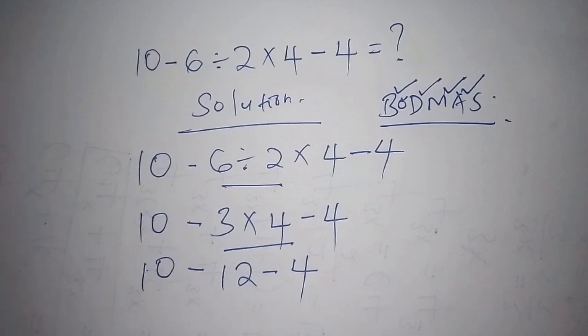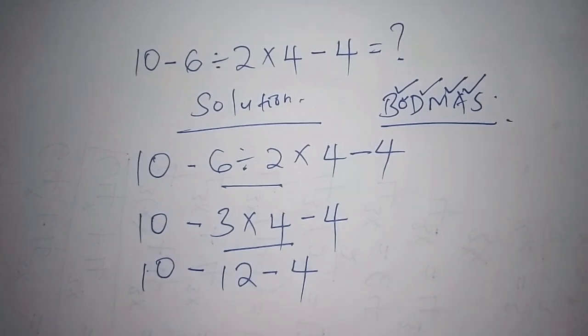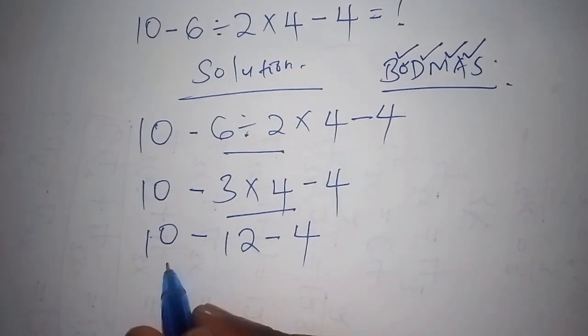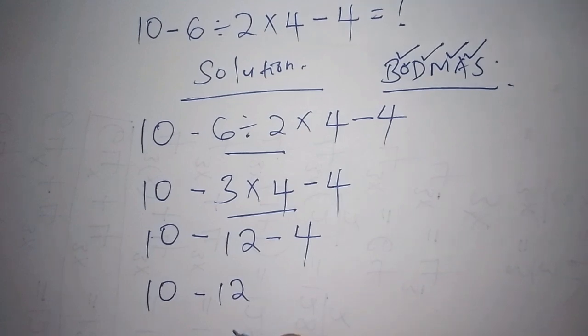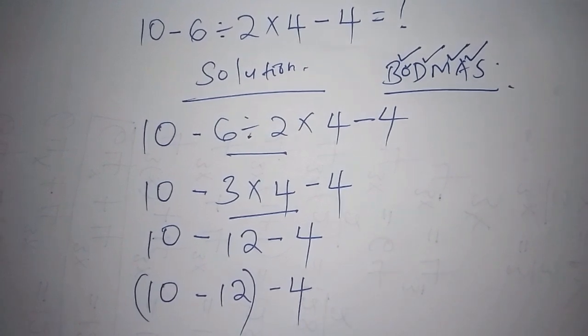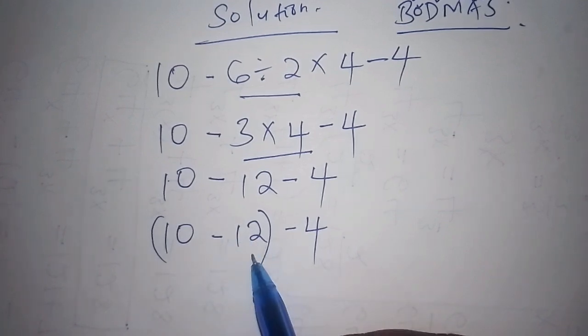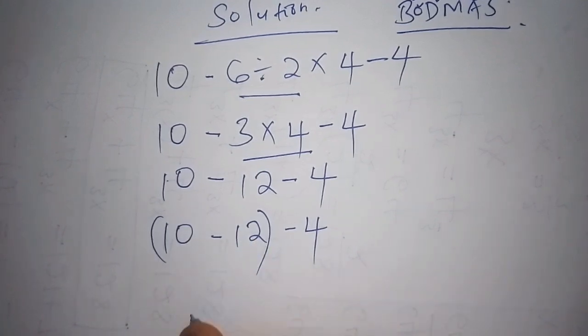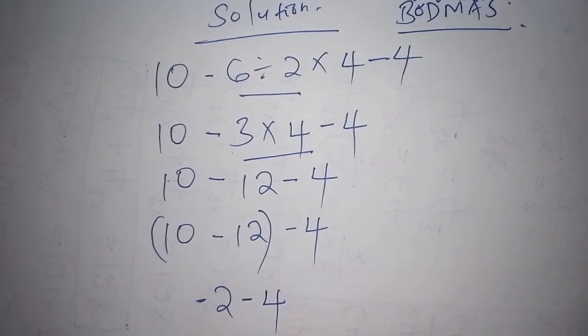So we have to check how you're going to work out the subtraction sign. So here now, we are going to work it out this way. So here now we shall have 10, then minus 12 first. Then from there, you put the bracket, then you minus minus 4 so that you avoid the issue of confusion. So after that, now you shall have to work out 10 minus 12 and 10 minus 12 is not 2. It is minus 2. So we shall have minus 2, then minus minus 4.